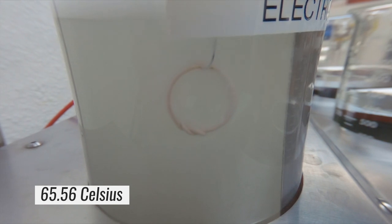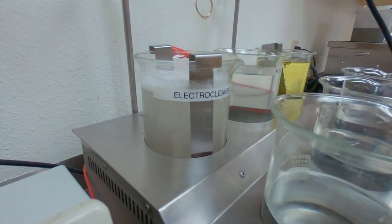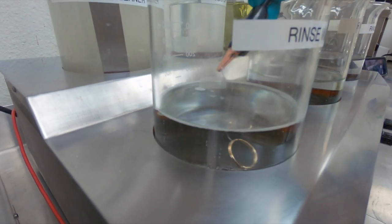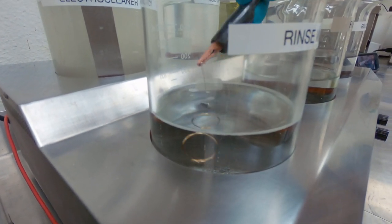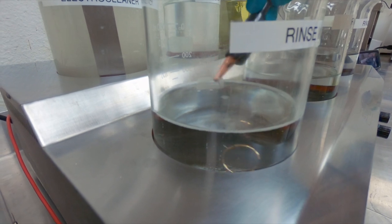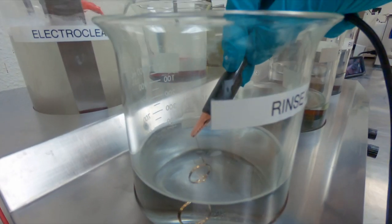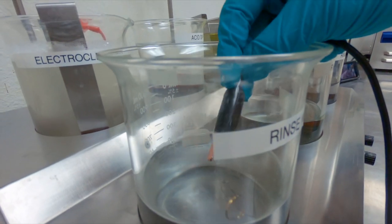Now that we're done electro cleaning, I'm going to shake off any excess electro cleaner. Now I'm going to go into our dedicated distilled water rinse, just agitating the piece so we rinse all the electro cleaner off the surface. I have a dedicated rinse for each of my solutions. This prevents any drag out and cross contamination.